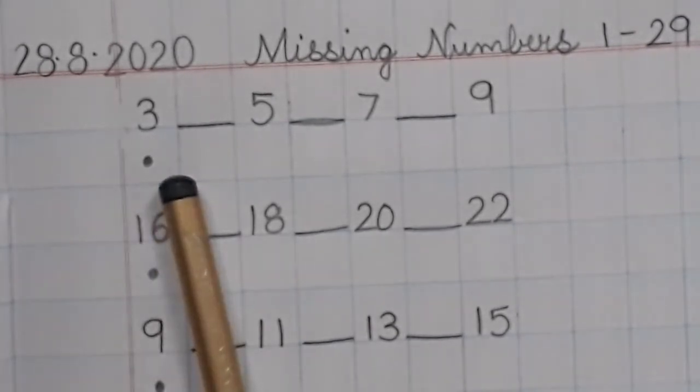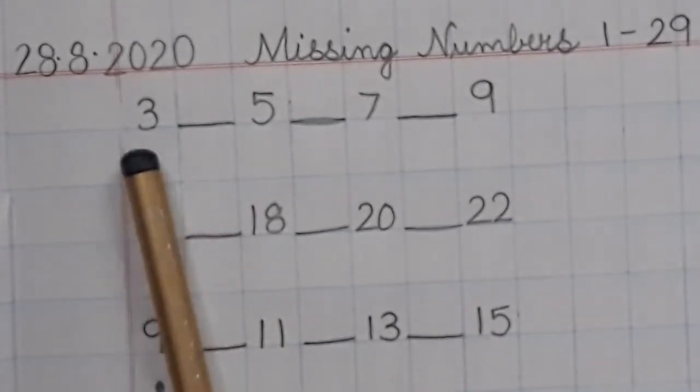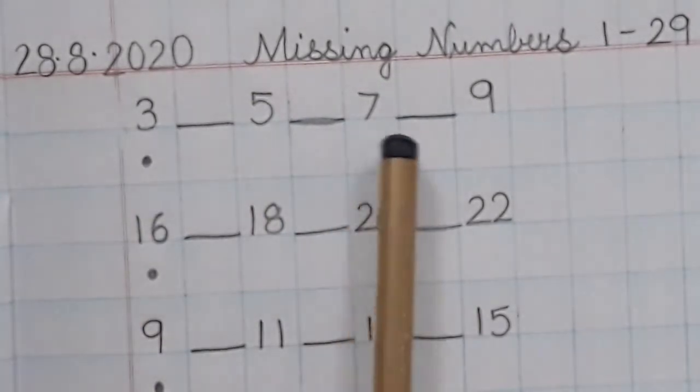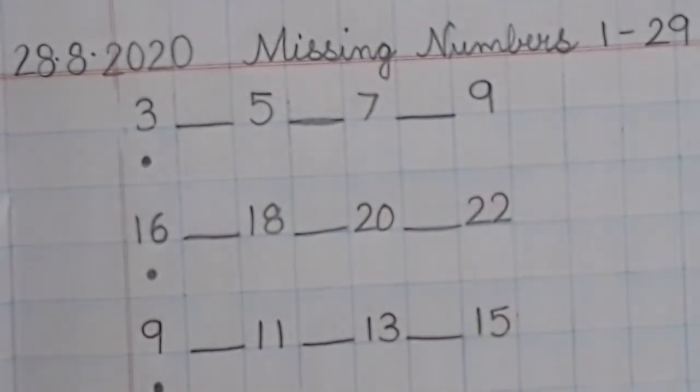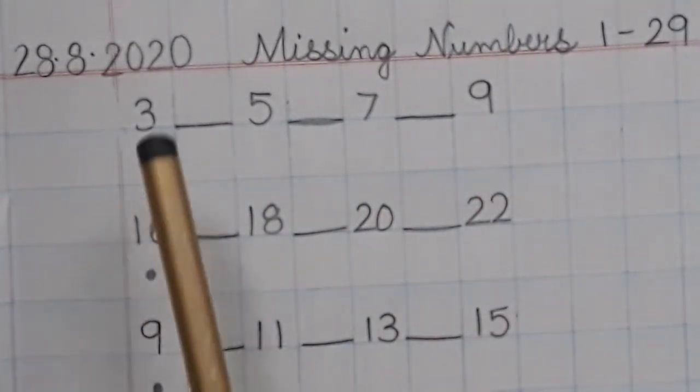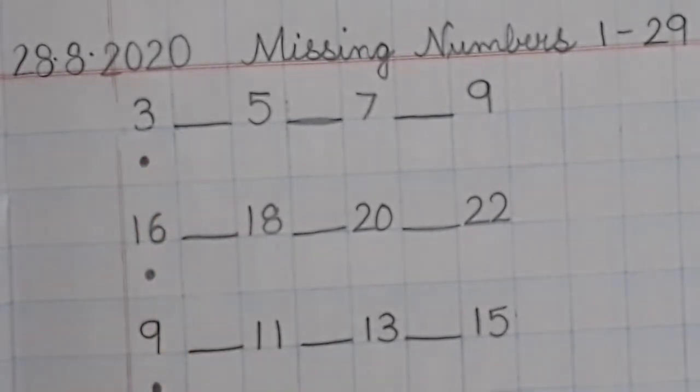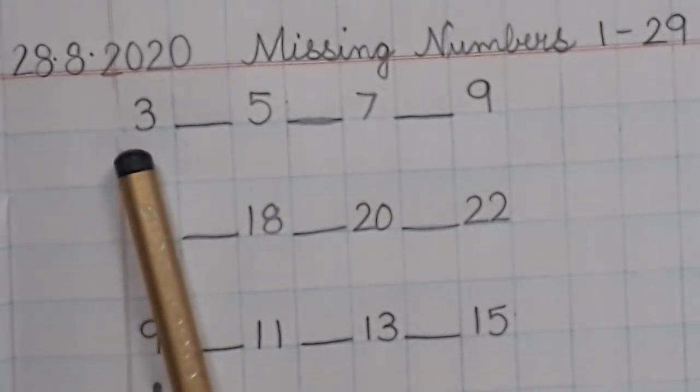Let's begin with the first one. It says 3, 5, 7, 9. So I have to begin counting from number 3. I will not start from 1, 2, 3, 4. No. Please begin counting from the number that you see, okay?